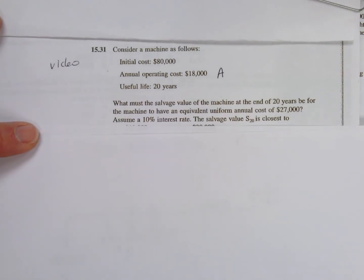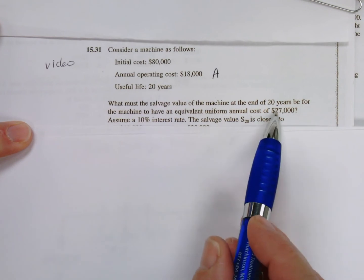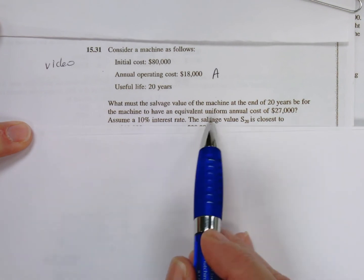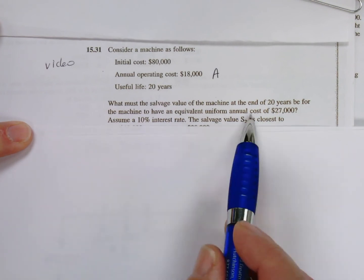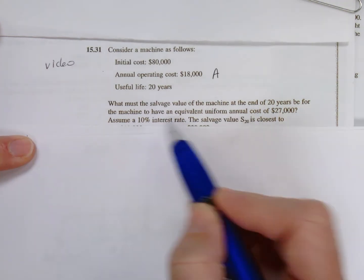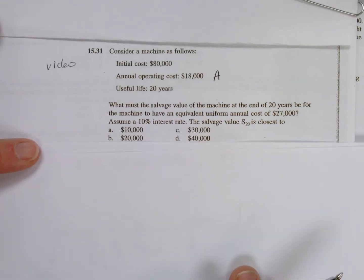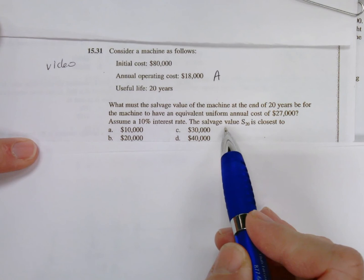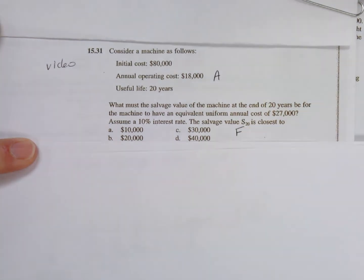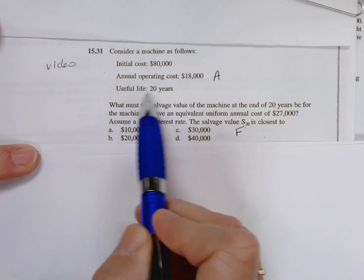The question goes on to ask what must the salvage value of the machine be at the end of the 20-year life to have an equivalent uniform annual cost of $27,000. Assume a 10% interest rate. We're asked to find a salvage value—the salvage value is a future disposal benefit, the amount that this equipment can be sold for at some time 20 years out in the future.